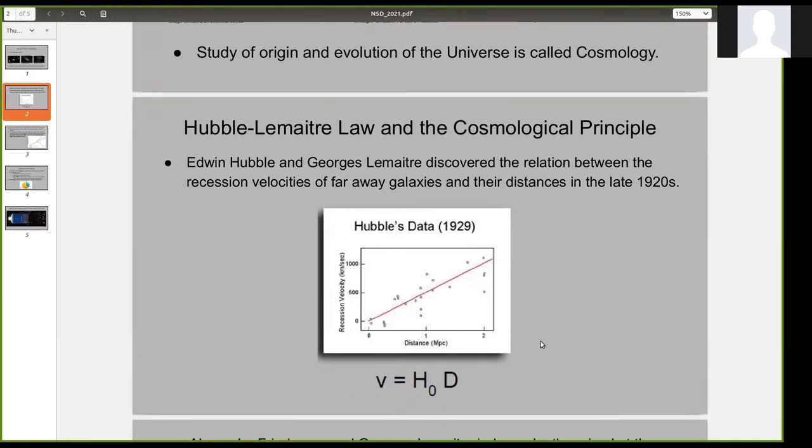This was observationally proved by Edwin Hubble, who measured recession velocity and distance of galaxies in space. So every point here is a galaxy and he fitted a straight line. His values of recession velocity were not accurate, but the general idea stayed true. Hence it established that the universe is expanding.